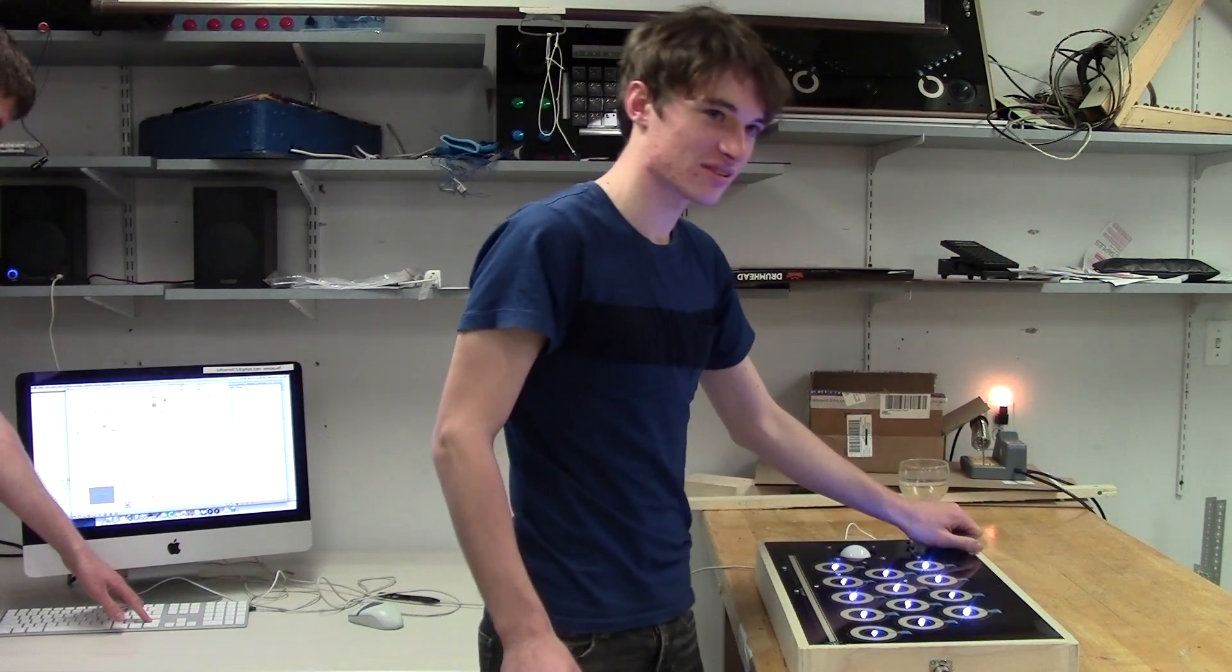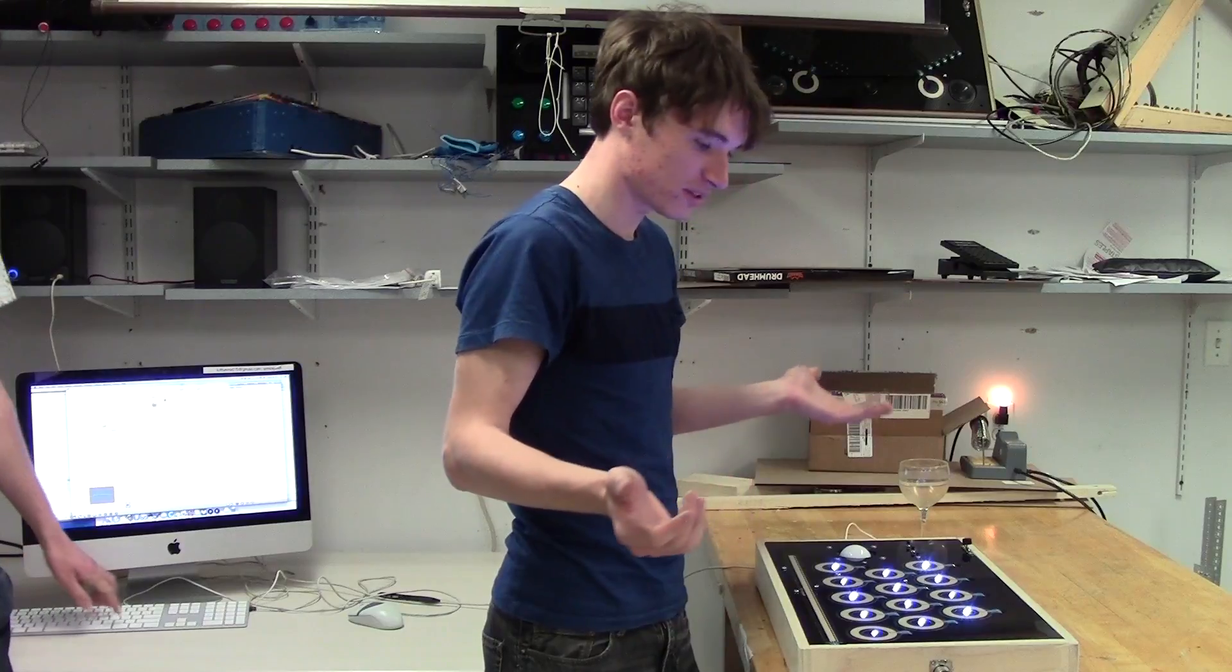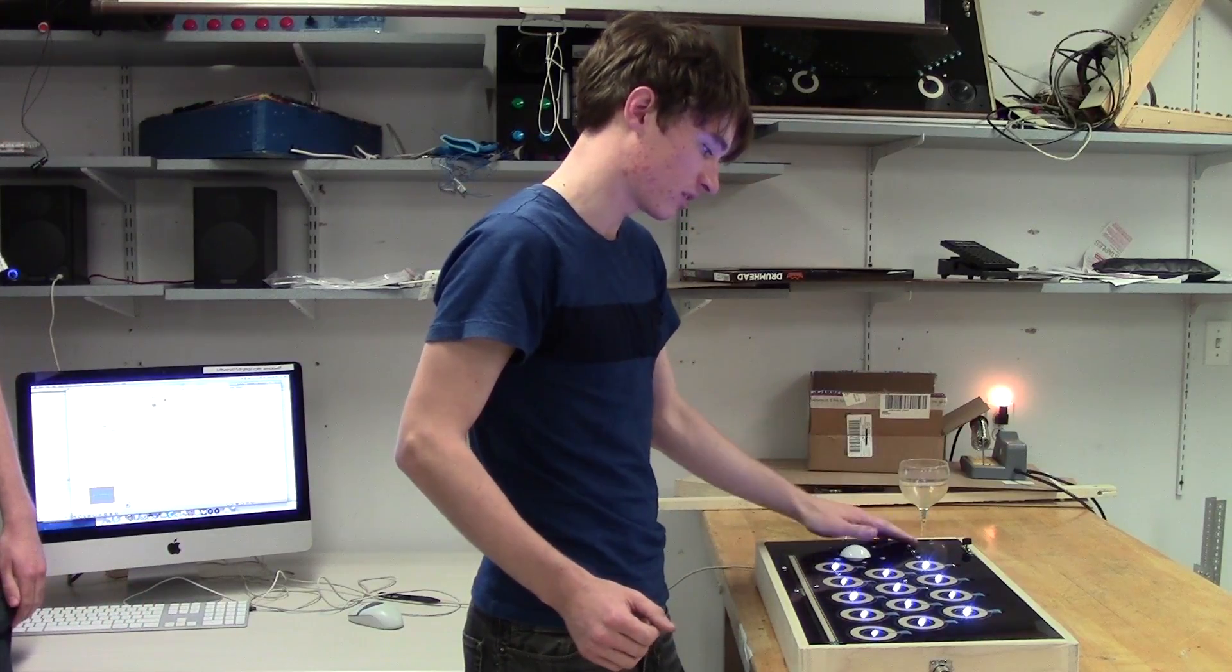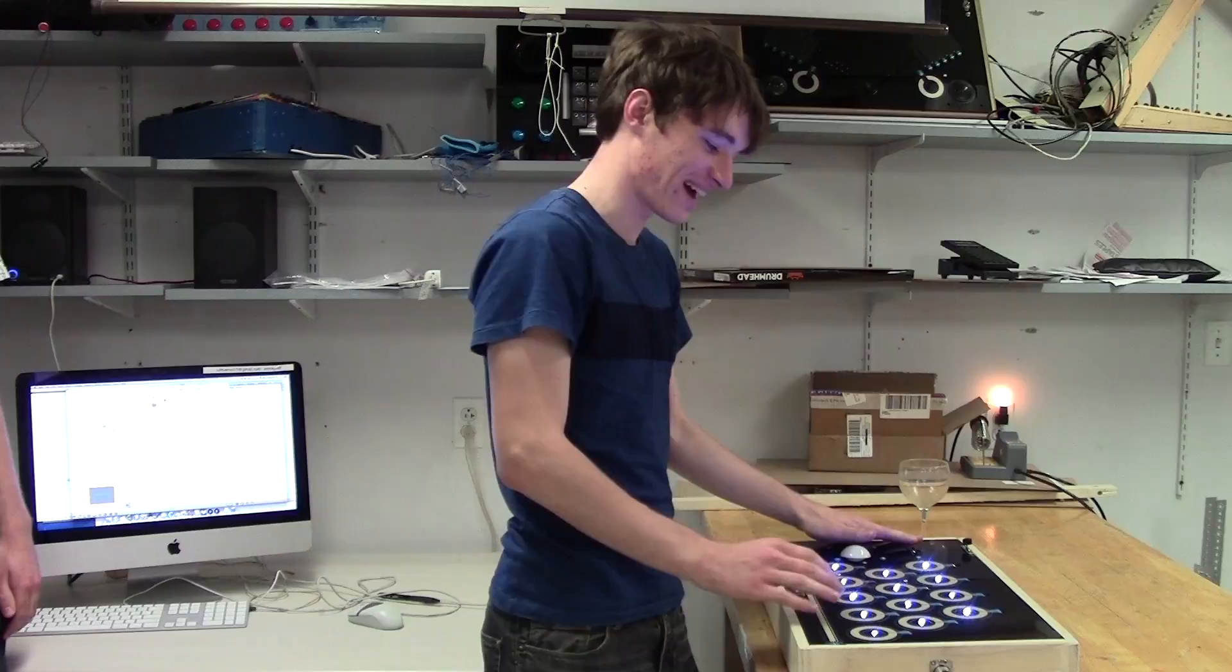So the theremin mode is the simplest of the modes. Basically, you press any note and it turns on. You can turn it off with this button, and this button also changes the echo.